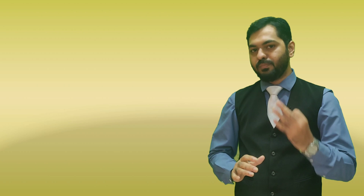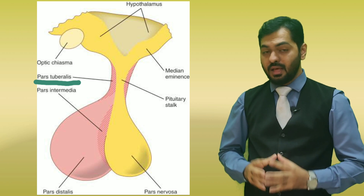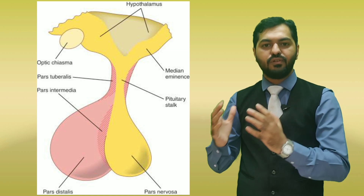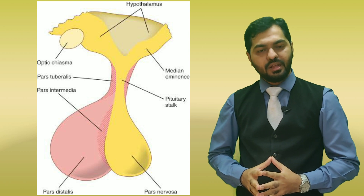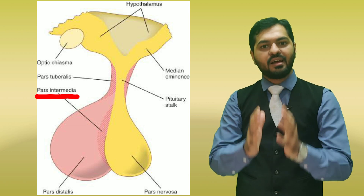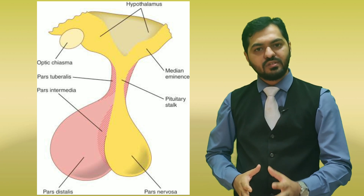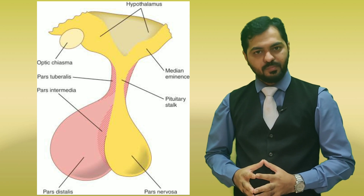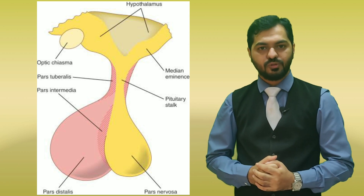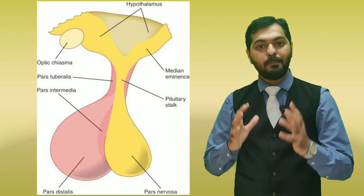There are three major parts of the anterior pituitary. The first part is known as the pars tuberalis — a tubular, collar-like extension near the infundibulum. The second part is known as pars intermedia, also known as the intermediate lobe. This pars intermedia is like a cleft between the pars distalis and pars nervosa, and is considered to be non-functional in humans, but in lower vertebrates it has a role in hormone secretion. The lowermost and most important part is known as the pars distalis.